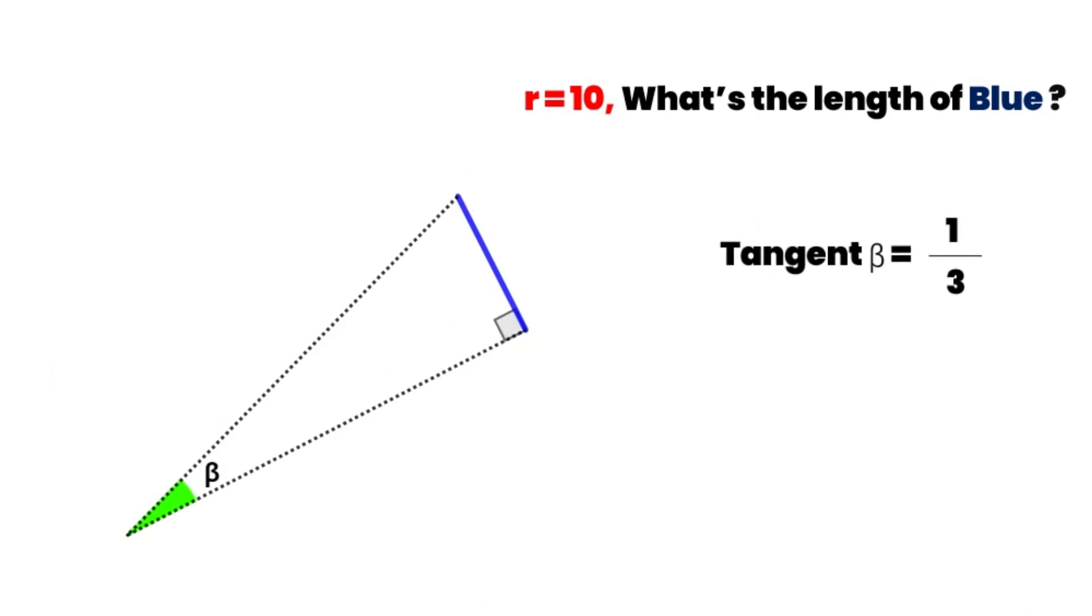In this right triangle, let's say the length of the blue segment is X. The other side of the right angle is equal to 3X because tangent beta is equal to one third.